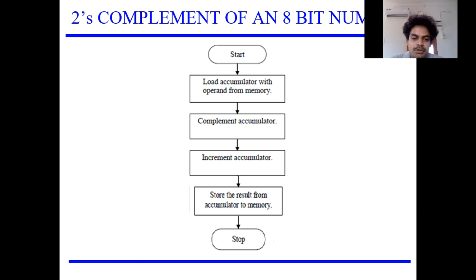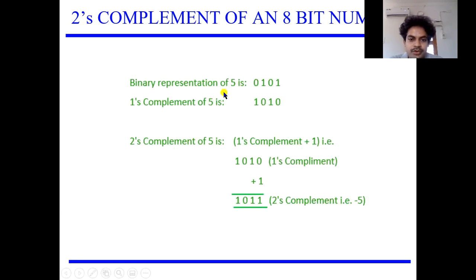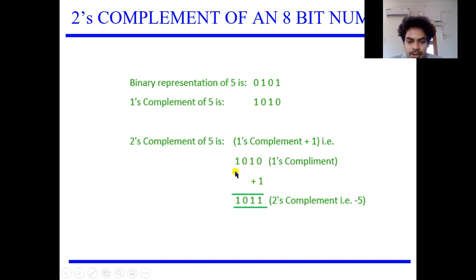Next, we will see an example of what the 2's complement is. For example, the value number 5 is represented as 0101. The 1's complement of 5 is 1010. So the 2's complement is nothing but adding 1 to 1010. So 1010 plus 1 gives me 1011. This is the 2's complement of my representation of 5.